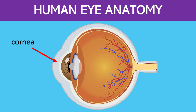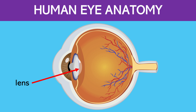This is the cornea. It is the clear dome-shaped surface that covers the front of the eye. It helps to focus incoming light onto the retina.